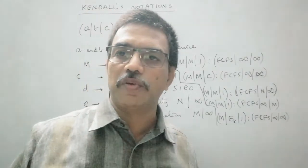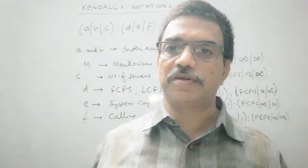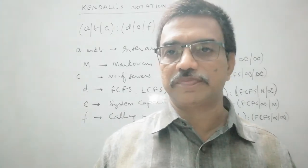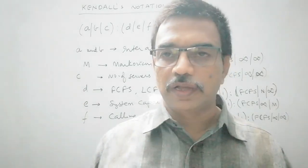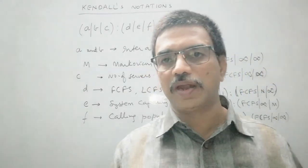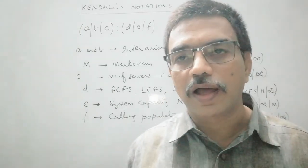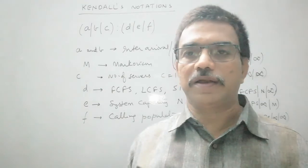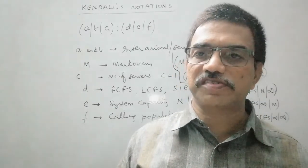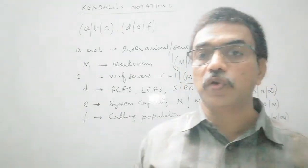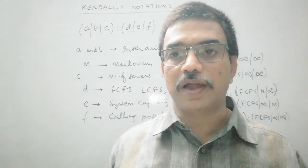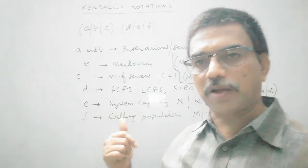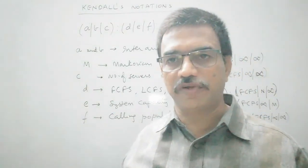Thank you very much. In some other video, I will give the mathematical relations for the queuing parameters — first, P0, that is probability of having no customer in the system, or the probability of an idle server; next, Pn, the probability of having N customers in the system; rho, the traffic intensity or utilization factor, that means the proportion for which the servers are busy; then Ls, expected number of customers in the queuing system; Lq, expected number of customers in the queue; Ws, average time spent by the customer in the queuing system; and Wq, average waiting time of a customer in the queue. The formulas for different parameters for these models will be explained in some other video. Thank you very much.